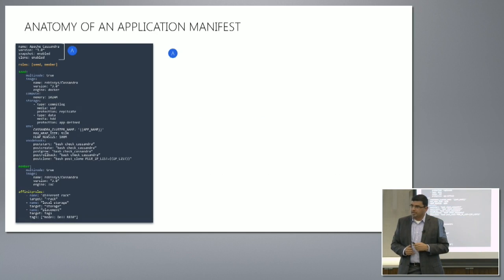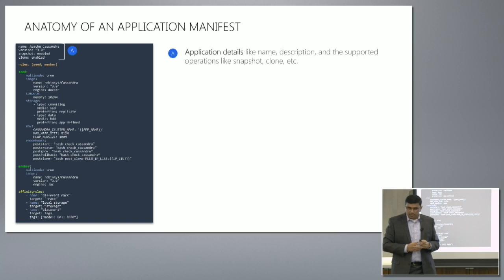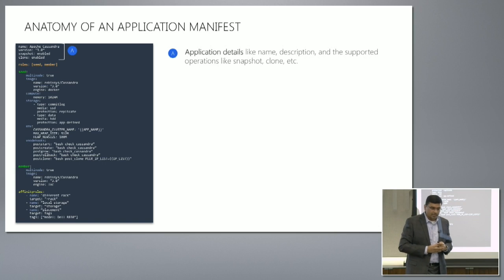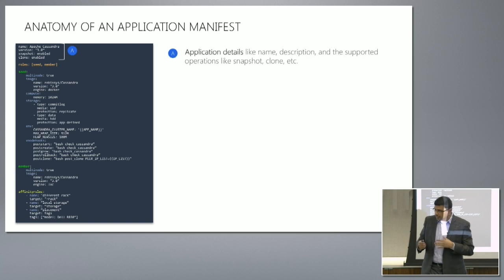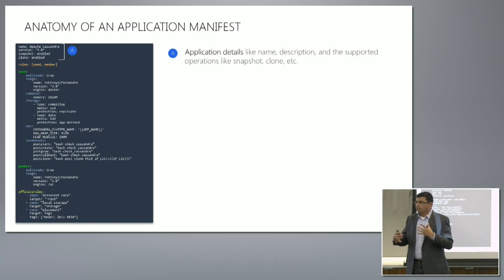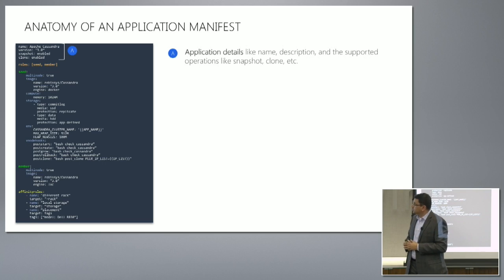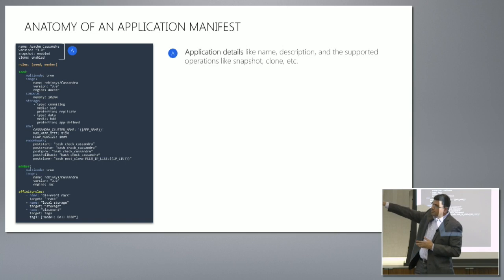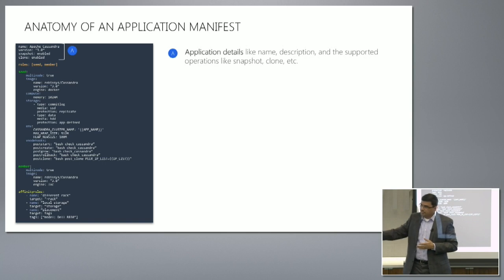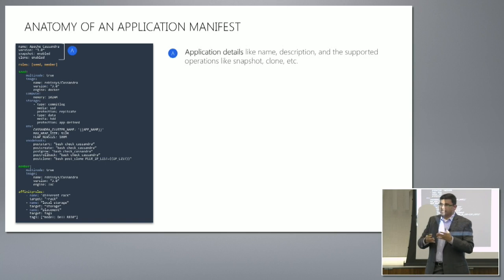Let's dig a little deeper. What is this manifest? Here I have an example of a Cassandra manifest — a YAML file we call a manifest file. You describe the basic stuff of an application: the name, the version, and so on. The next thing is you describe that this application has multiple roles in it. The more complex and data-heavy an app is, the more services form it — like in Cassandra, you have member seed roles or member roles; in Hadoop, you have name nodes, data nodes, edge nodes, Zookeeper, and so on.